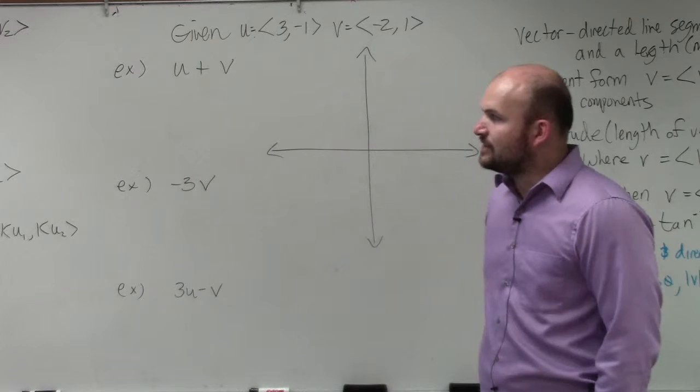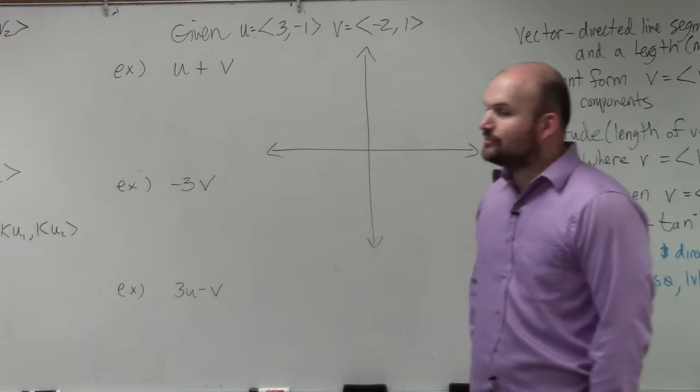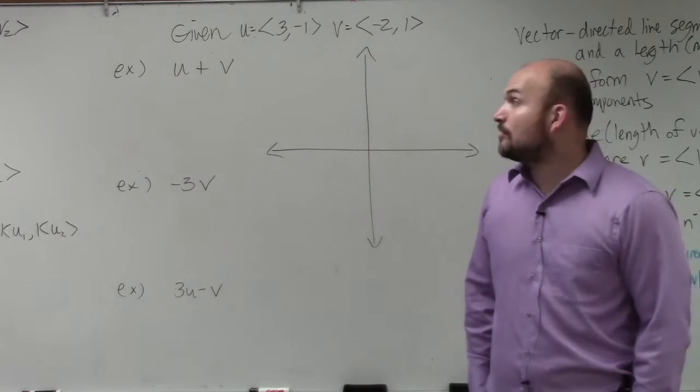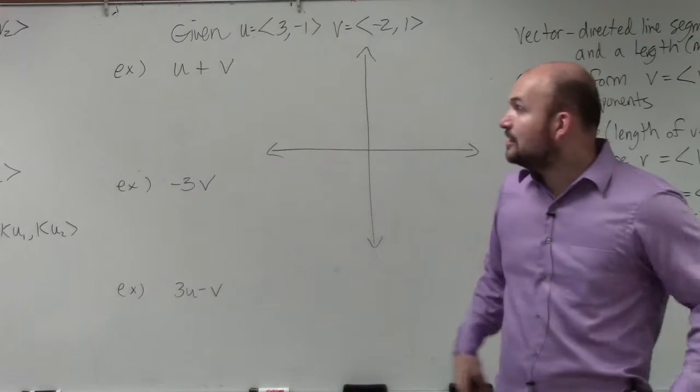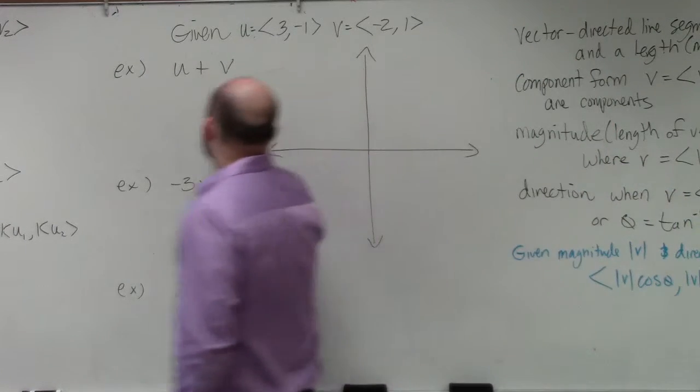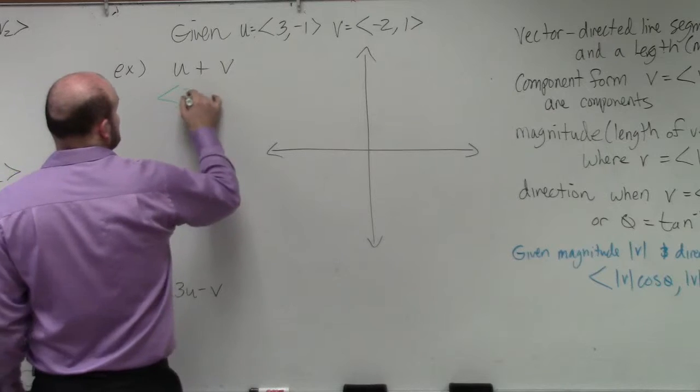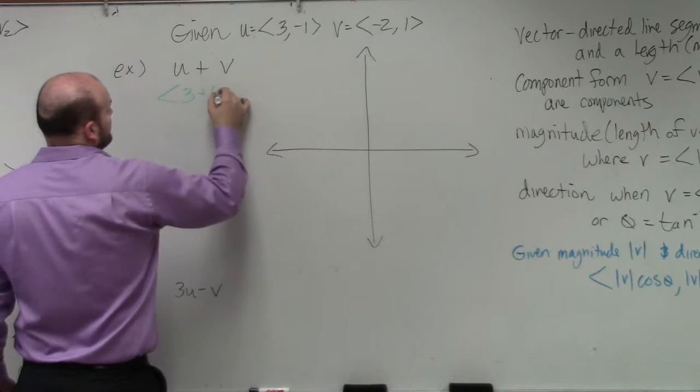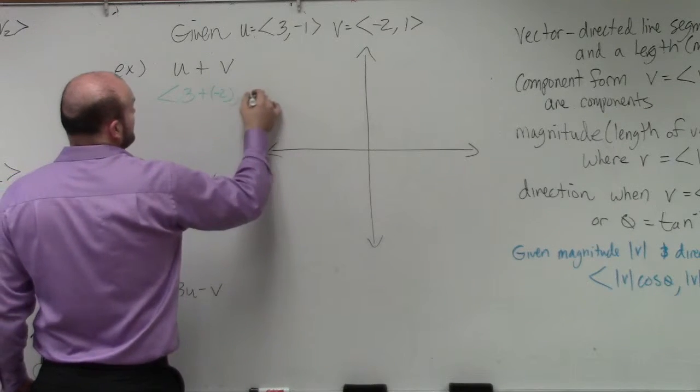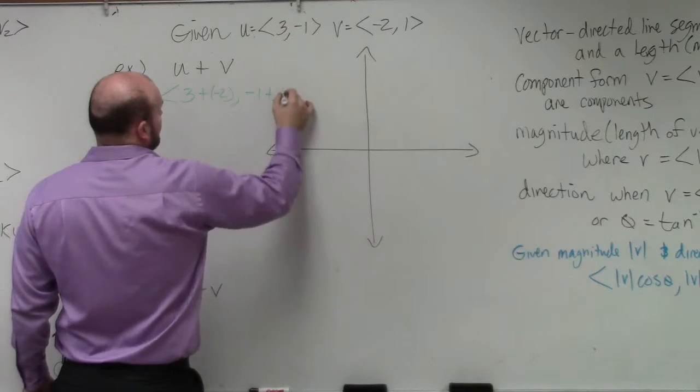So if you guys look at the formulas that I have written down there, u plus v is equal to the component form of u1 plus v1 comma u2 plus v2. So basically all I'm simply going to do is do 3 plus negative 2 comma negative 1 plus 1.